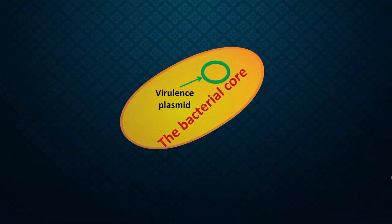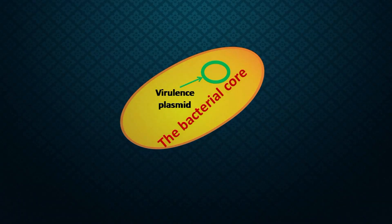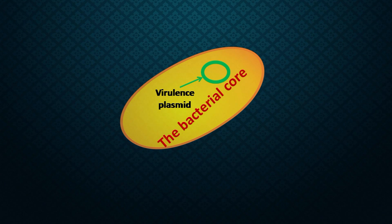Let us look at this bacteria and understand the strengths it has. I am referring to the commonest bacteria which causes urinary infection — this is E. coli. The pathogenic E. coli has a bacterial core, and within the bacterial core it has what's called a virulence plasmid. It is genetic information which differentiates less pathogenic bacteria from more pathogenic bacteria. So this is genetic coding — the invader is built strong from the start.